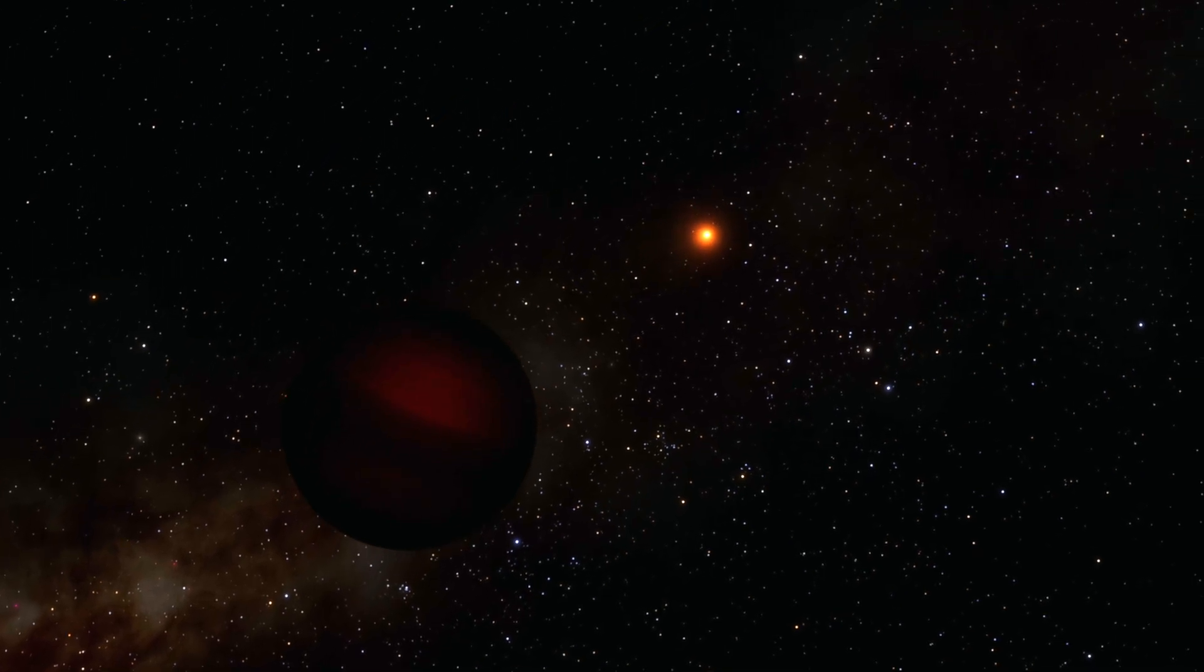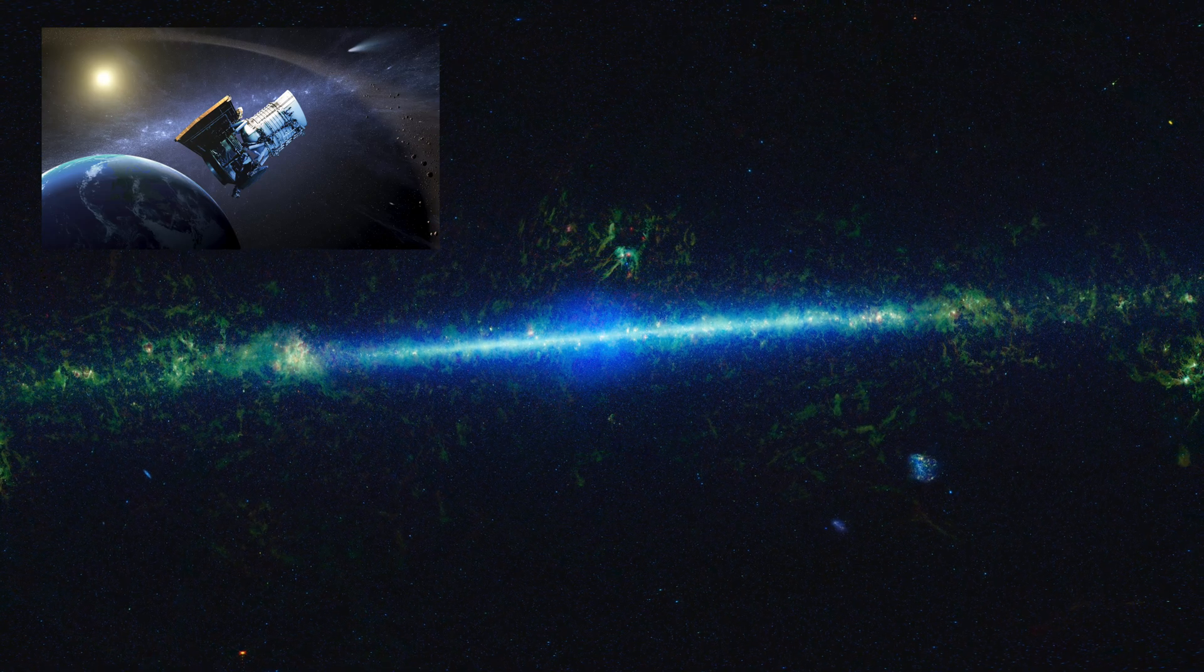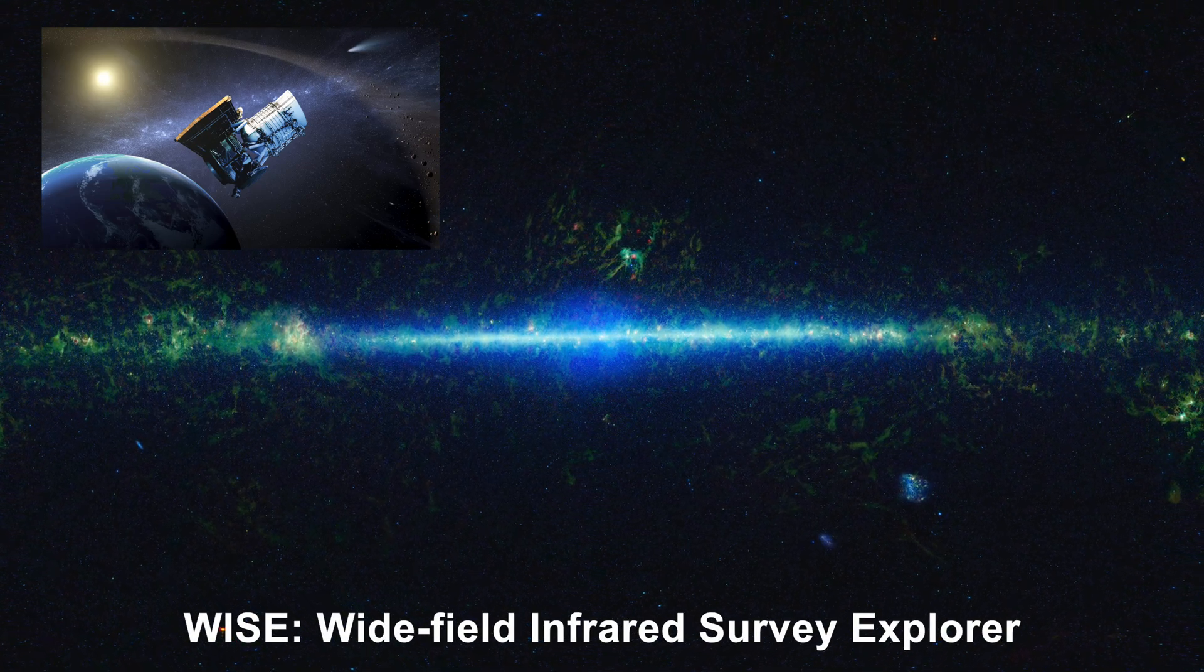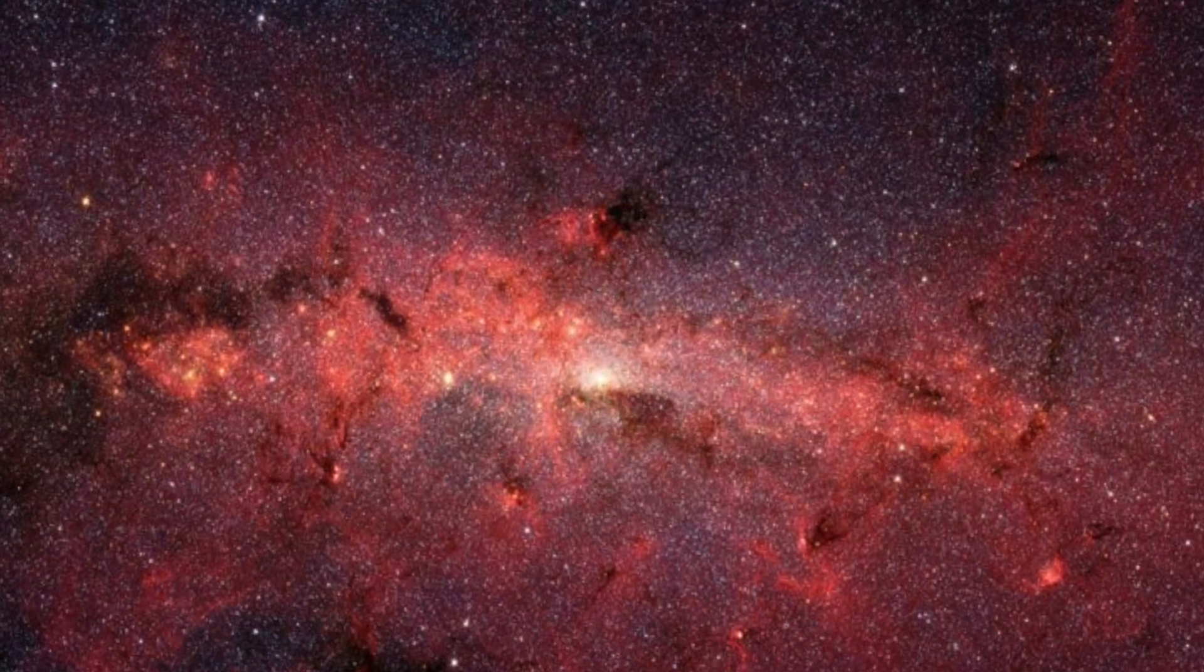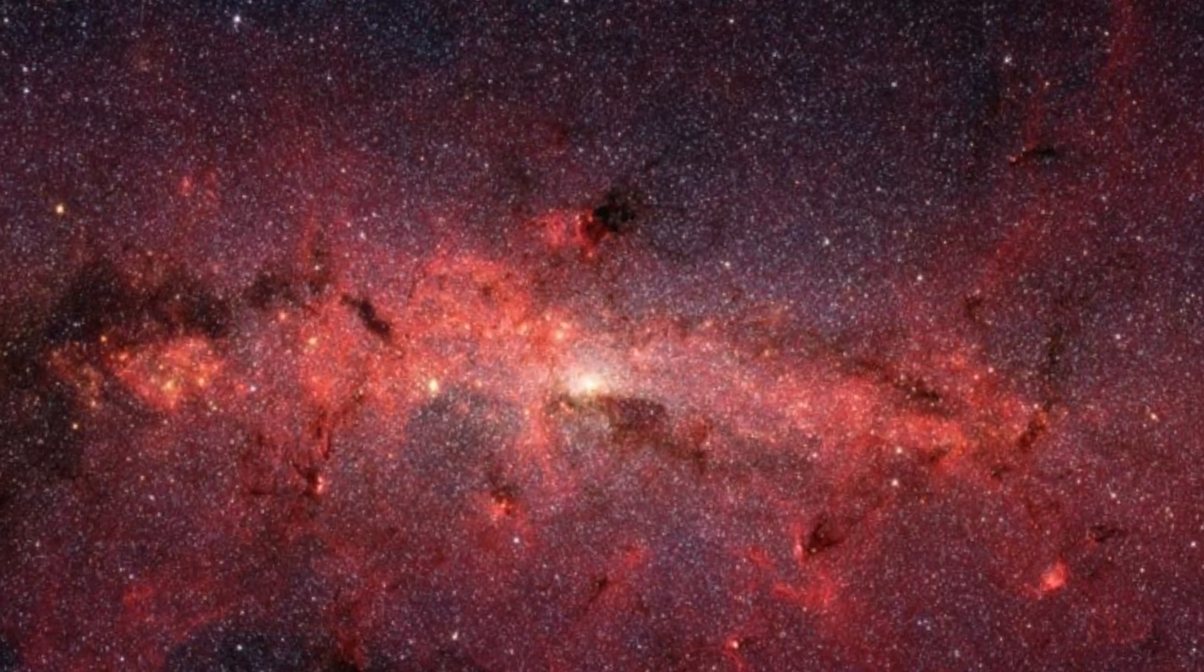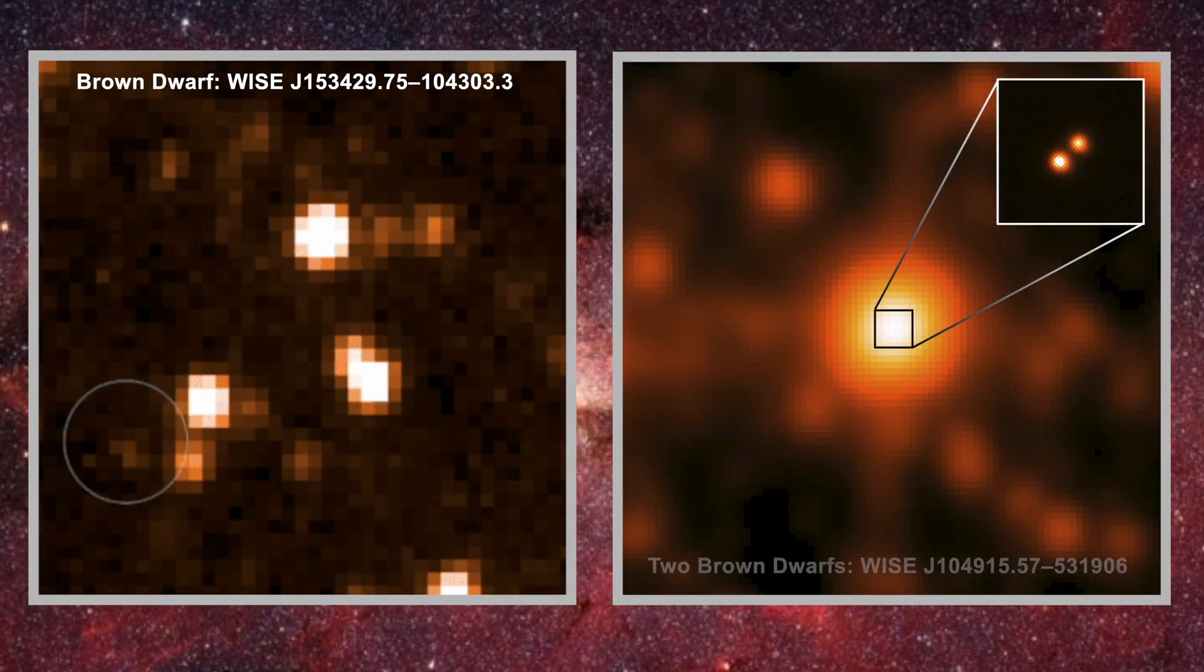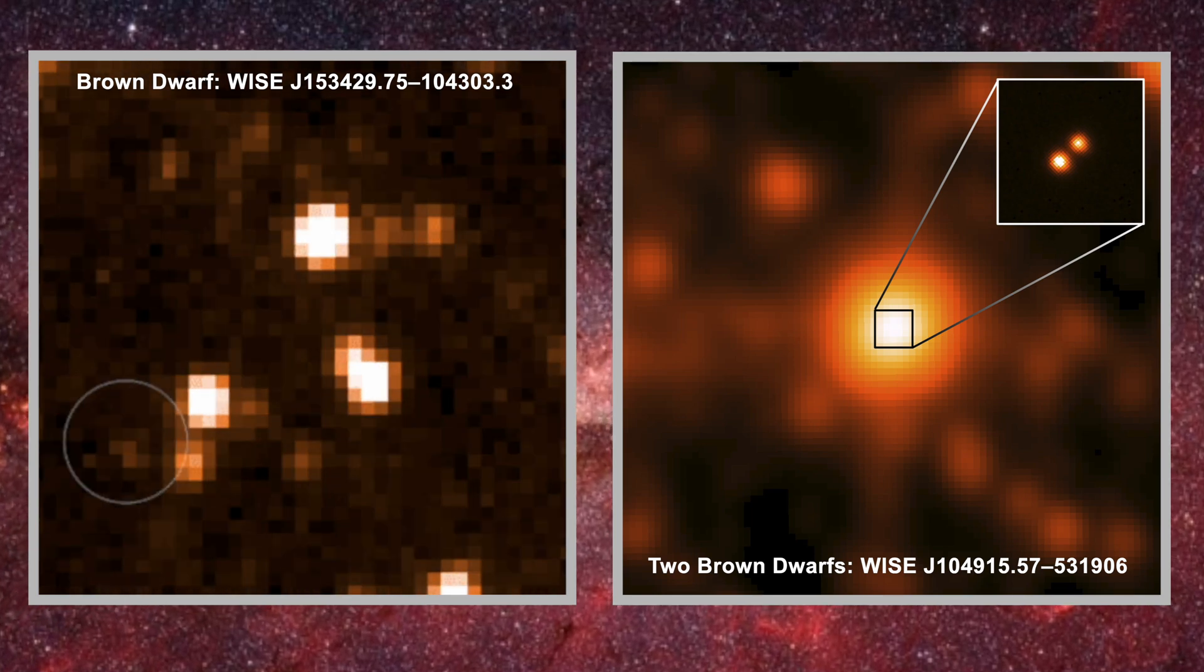And then in 2010, a game-changing survey came online, WISE, NASA's Wide-field Infrared Survey Explorer. WISE had one job, to map the sky in infrared, a wavelength that could pick up heat from objects too dim for optical telescopes. If Nemesis was hiding in the darkness, WISE would see it.